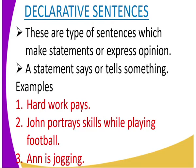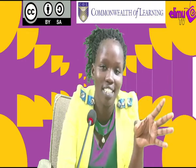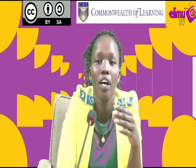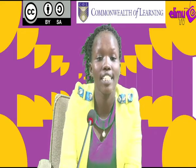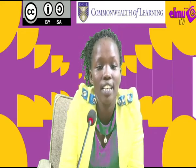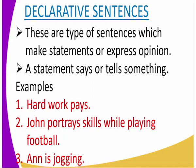Declarative sentences are sentences which express or make a statement, or express an opinion. They tell or say something. For example: 'My cat is black' — that is a statement. 'She won the trophy' — that is a statement. Further examples include: 'Hard work pays,' 'John portrays skills while playing football,' and 'Anne is jogging.' These three examples are statements or express an opinion.